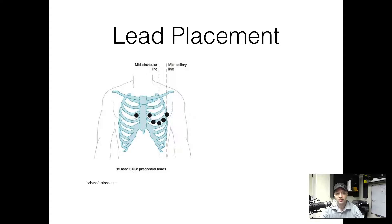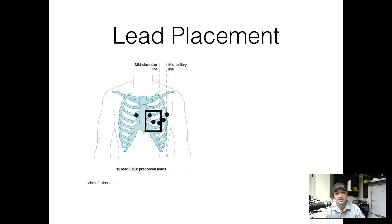After we place V3, we'll place V6 to the mid-axillary line along the same plane as V4, and then V5 is going to go in between V4 and V6. So the order is: V1, V2, V4, V3, V6, V5. Trust me, it'll all make sense. You want to make sure that V3 is in between V2 and V4. Now let's get looking at some 12-leads.